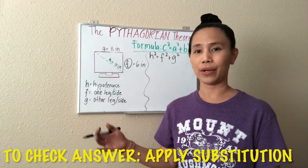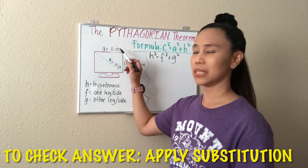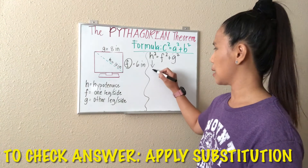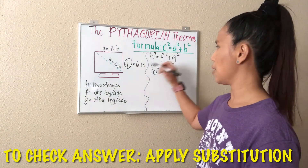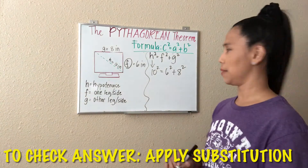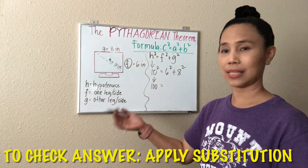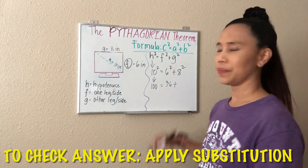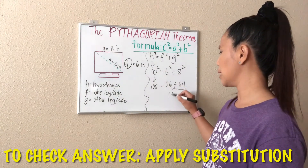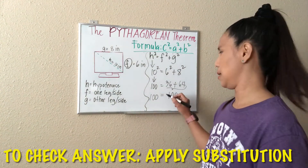What if you would like to check if your answer is correct? So previously we solved for the value of G, which is 8 inches. We have H as 10, so we substitute — 10 squared. F is equal to 6, so that will also be 6 squared. And G is equal to 8, so 8 squared — don't forget to square it. 10 squared is 10 times 10, so we have 100. 6 squared is 6 times 6, equal to 36. 8 squared is 8 times 8, so that is 64. Adding 64 plus 36 gives us 100, and the other side is also 100. So 100 is equal to 100 — that means you are correct.